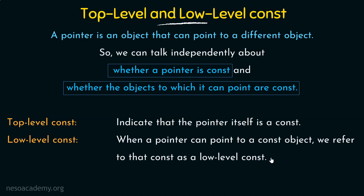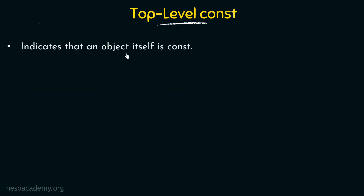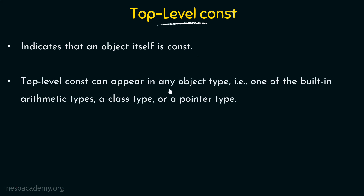Let's look deeper at the differences between top-level and low-level constants. Top-level constants indicate that the object itself is a constant — just like we said in the case of pointers, when the pointer itself is a constant, those constants are known as top-level constants. Similarly, if it is indicating that any object itself is a constant, not only pointers, then they are known as top-level constants. Top-level constants can appear in any object type — that is, any of the built-in arithmetic types, a class type, or a pointer type.